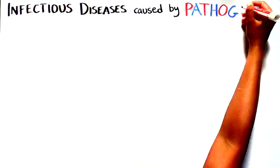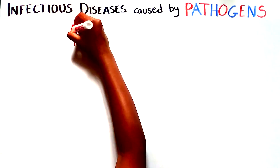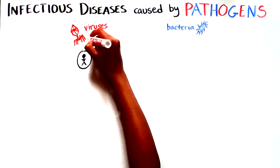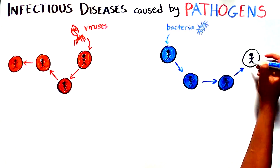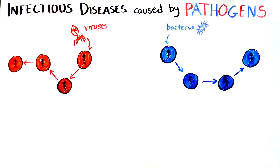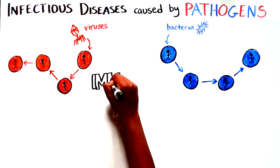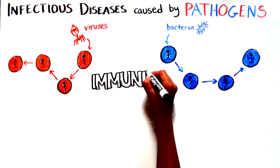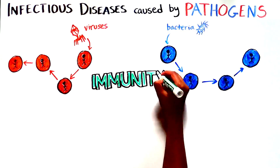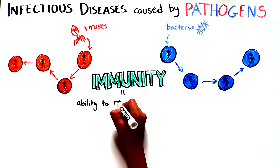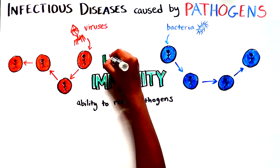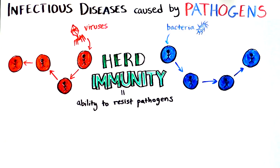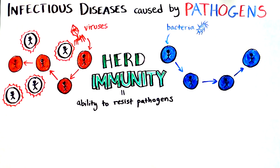Infectious diseases are caused by pathogens like viruses or bacteria that can jump from one person to the next. So how can we stop the cycle of transmission? The simple answer is immunity — our body's ability to resist a pathogen via the immune system. Today we'll talk about herd immunity: immunity zoomed out to the level of the population.